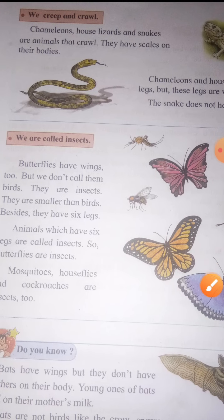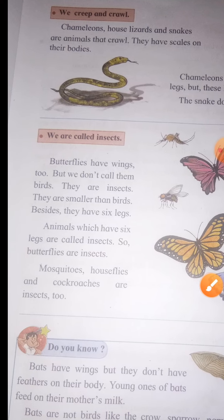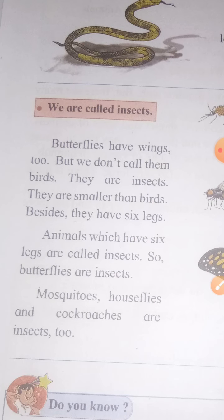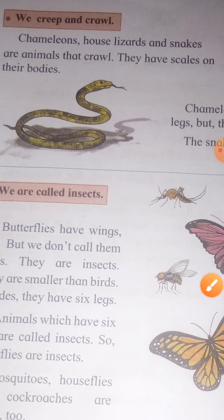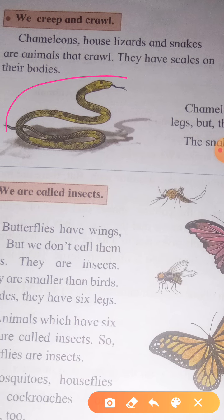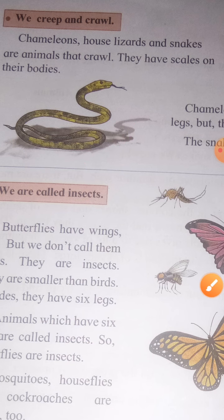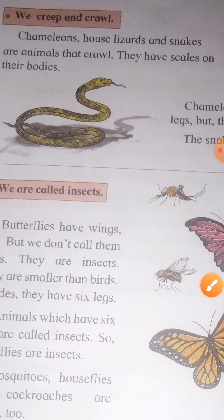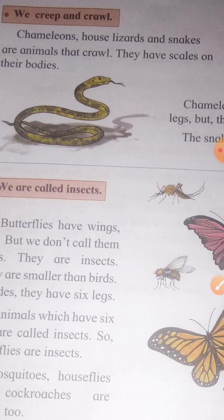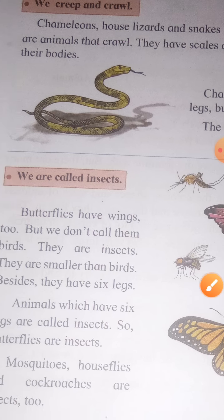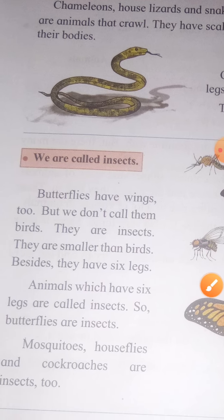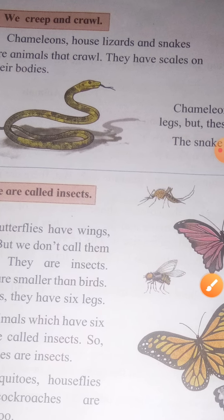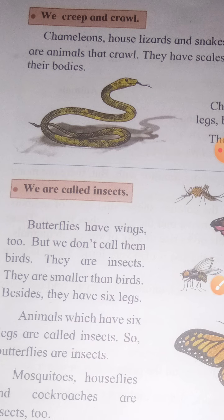What do we call them? Insects. Snake is an animal. House lizard is an insect, and the chameleon is also an insect. But the snake is an animal.